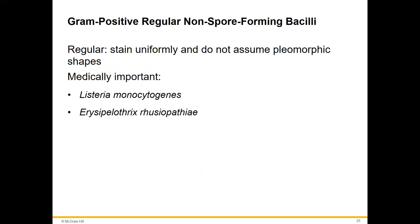Botulinum toxin in infants can be associated with honey. Those are our spore-forming gram-positive bacilli — the Clostridium species and Bacillus species.